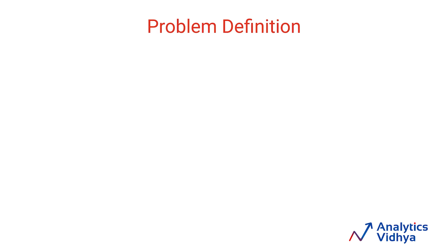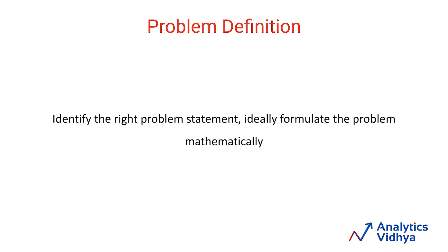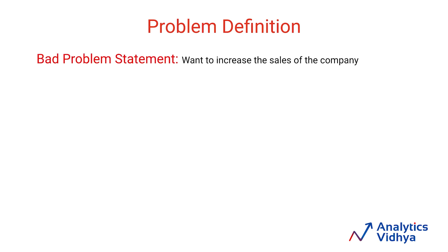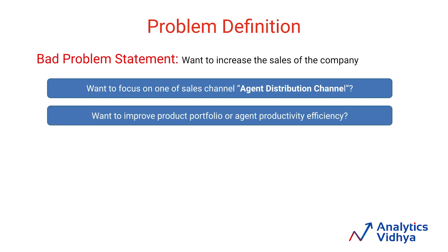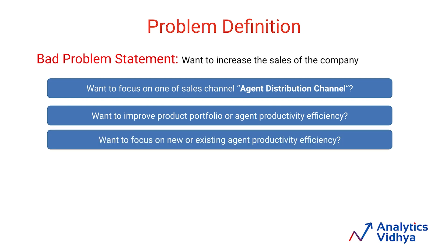The first step for successful model building is to define the right problem, which requires multiple steps: first identifying the problem and then defining it mathematically. An example of a bad problem statement is 'you want to increase the sales of a company' — this is bad because it lacks any kind of specifications. So we ask more questions from stakeholders: do we want to focus on the agent distribution channel, improve the product portfolio, or improve agent productivity efficiency? Do we want to focus on new or existing agent productivity efficiency?